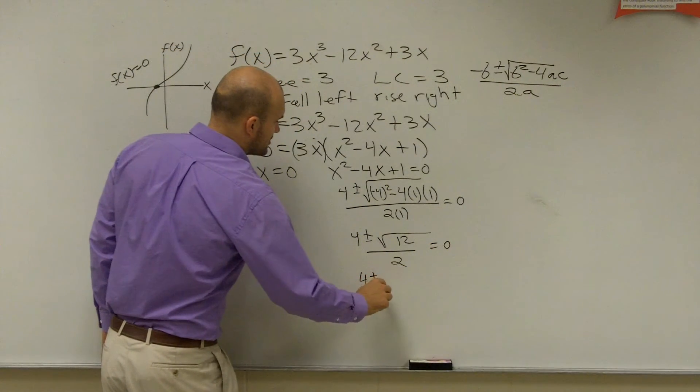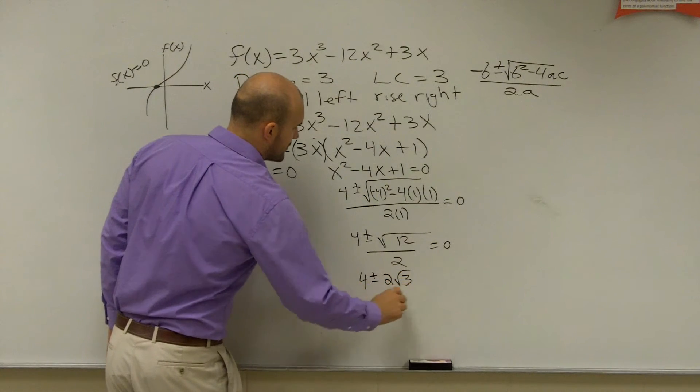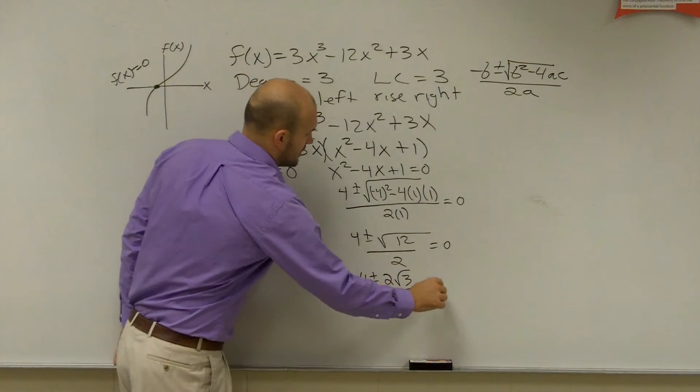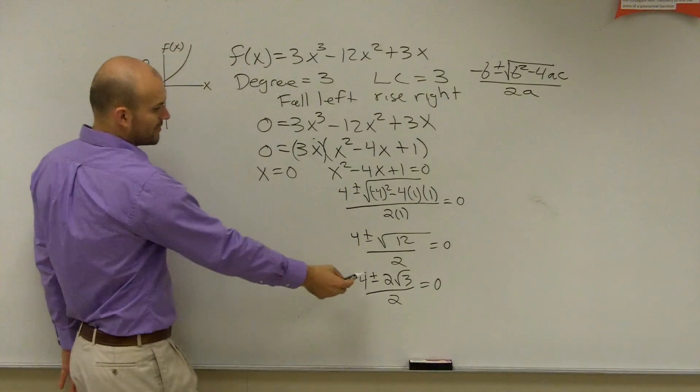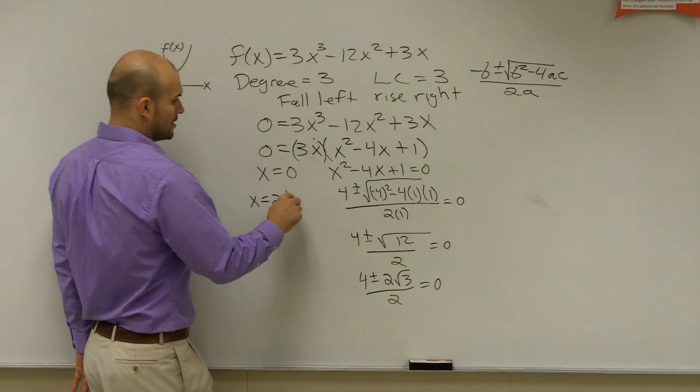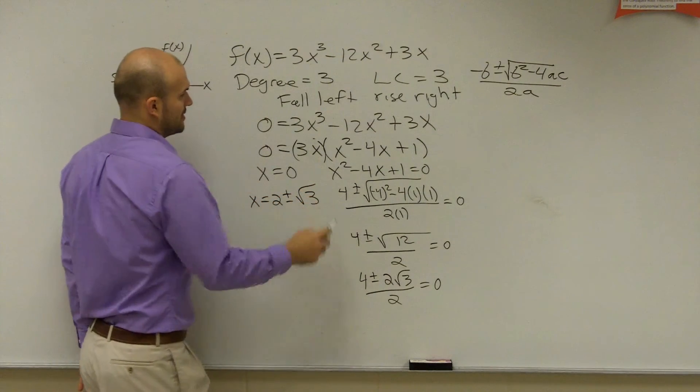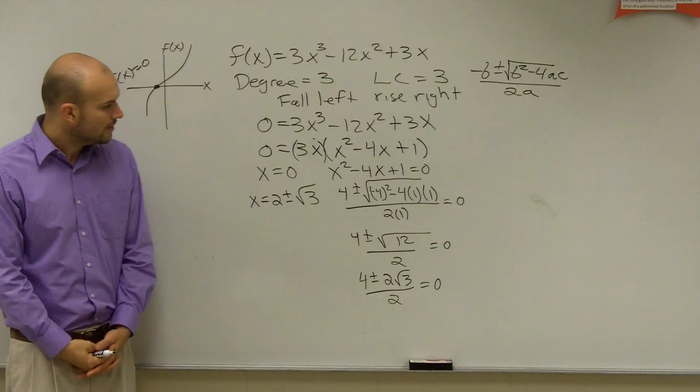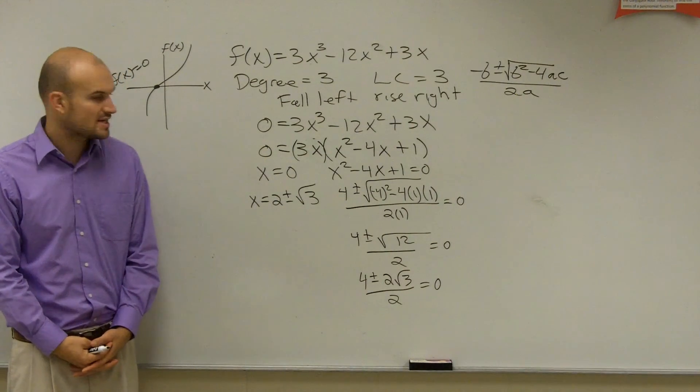So, I have 4 plus or minus 2 radical 3, all divided by 2, equals 0. And then what I end up coming up with when I divide my 2 into both of those, I have x equals 2 plus or minus the square root of 3. Okay? So, those are going to be my two zeros as I simple that out.